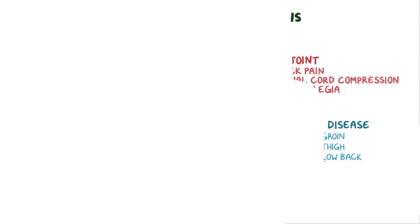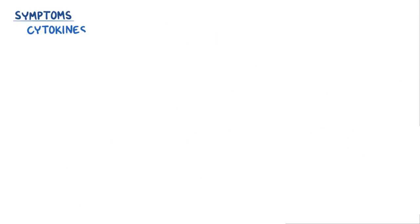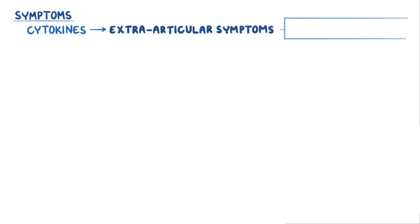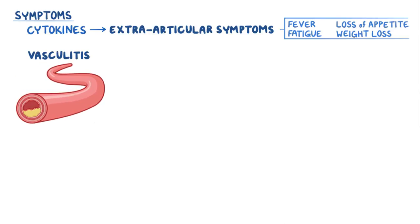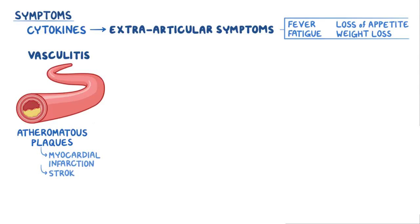The systemic inflammation in rheumatoid arthritis results in cytokines that can cause extra-articular symptoms. For example, cytokines can trigger fever, fatigue, and loss of appetite that can eventually lead to weight loss. Rheumatoid arthritis can lead to vasculitis, and specifically the formation of atheromatous plaques, which can lead to myocardial infarction and stroke.